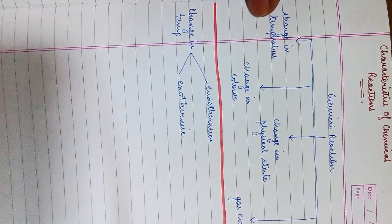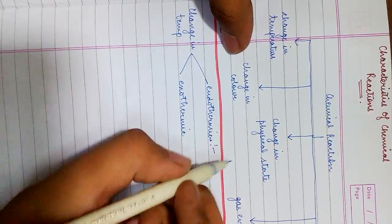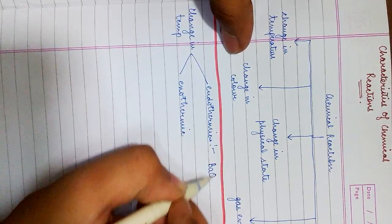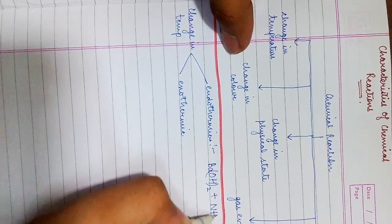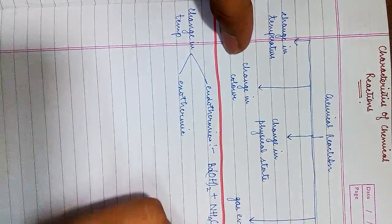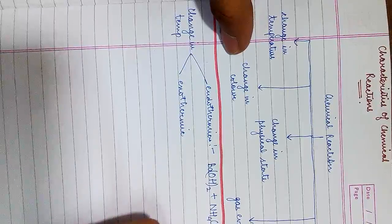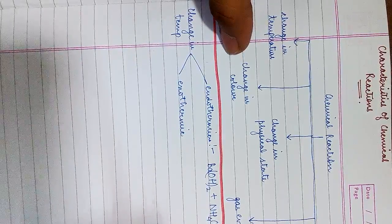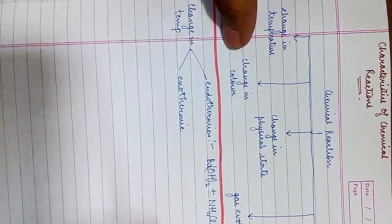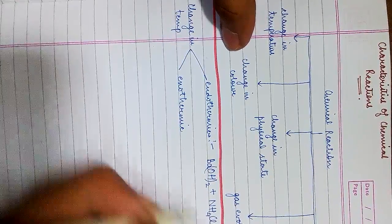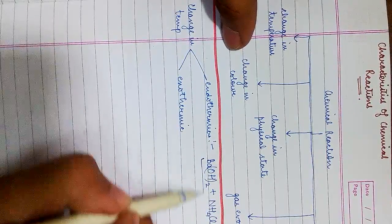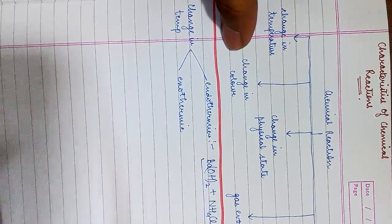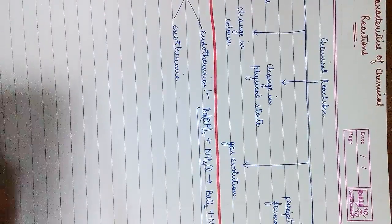So for endothermic we could have barium hydroxide reacting with ammonium chloride to form barium chloride and ammonium hydroxide. So whenever we are having this reaction taking place the test tube would become relatively cooler. So the test tube when we are doing this reaction would become cooler.